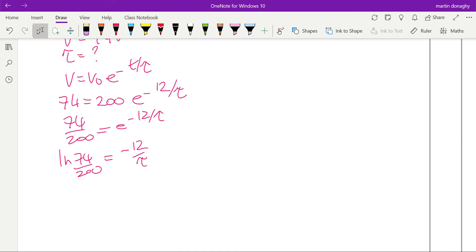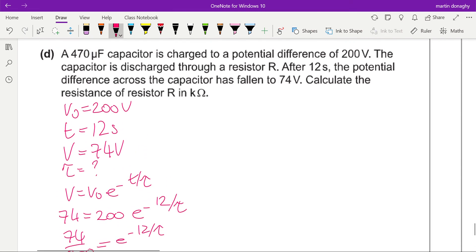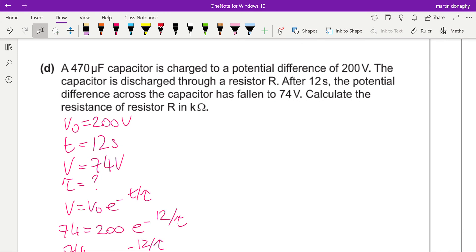And then natural log of e is just equal to 1, so it cancels out, so we end up with this. And if we do 74 divided by 200, natural log of that gives us minus 0.9943 is equal to minus 12 over tau. Rearranging that gives us tau. My value, this is slightly more accurate, is 12.1 seconds.